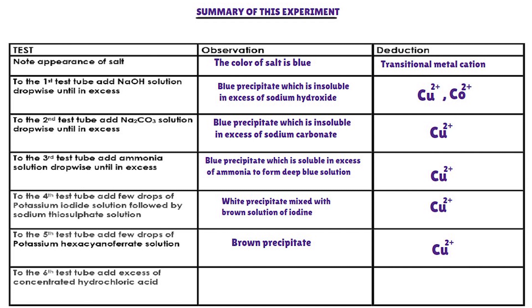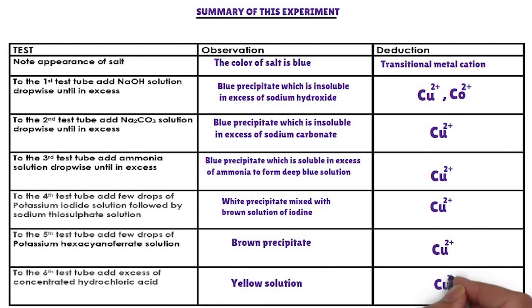Fourth confirmatory test: concentrated hydrochloric acid is added to the sixth test tube. The cation that forms a yellow solution with concentrated hydrochloric acid is copper-2-ion. Copper-2-ion is confirmed. The cation present in the salt is copper-2-ion. In the description, there are links for testing other cations and anions.